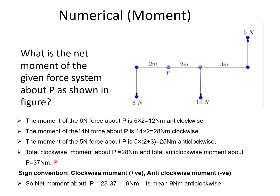To find the net effect, we apply a sign convention: clockwise is positive and anticlockwise is negative. The net moment about P is 28 minus 37 equals minus 9 Newton meters. The minus sign signifies the net moment is 9 Newton meters anticlockwise. So the final answer is 9 Newton meters anticlockwise. Thank you.